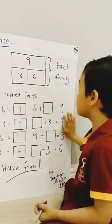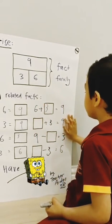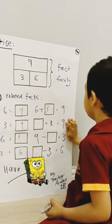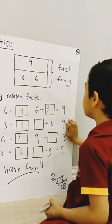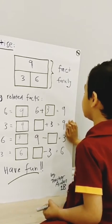If you say 3, you're correct. Something plus 3 equals 9. If you say 6, you're correct.